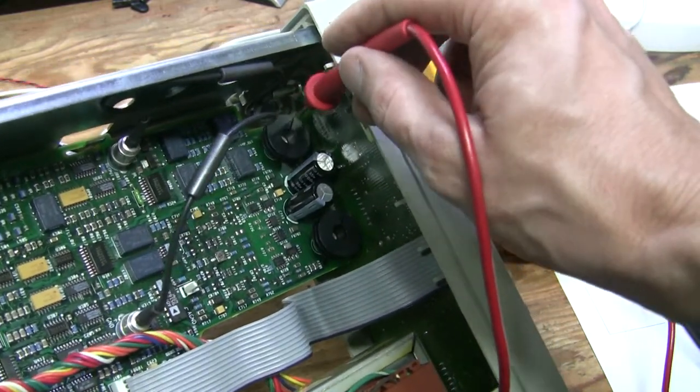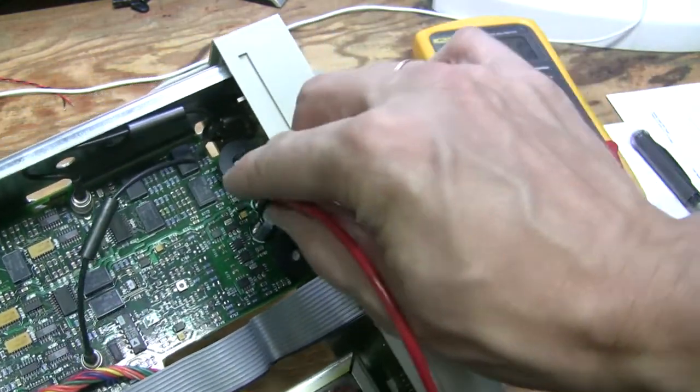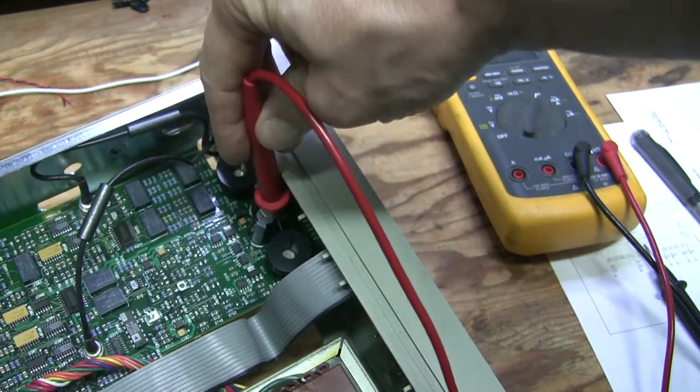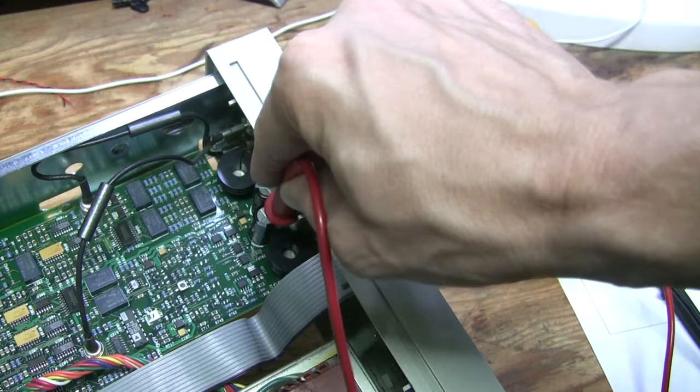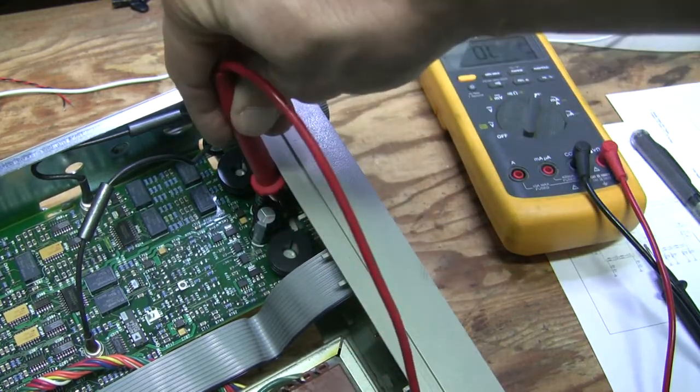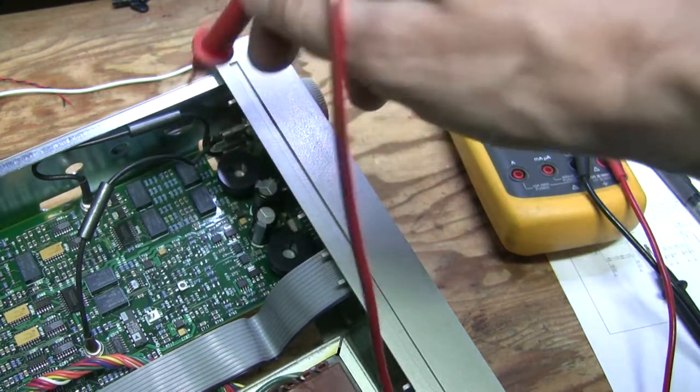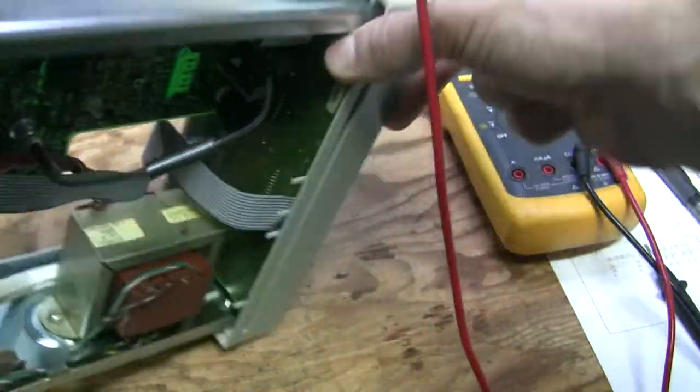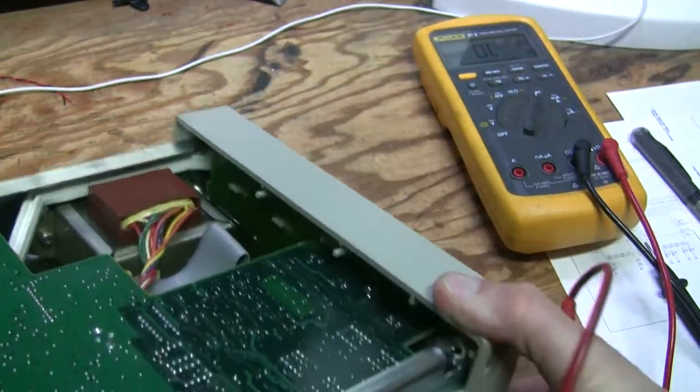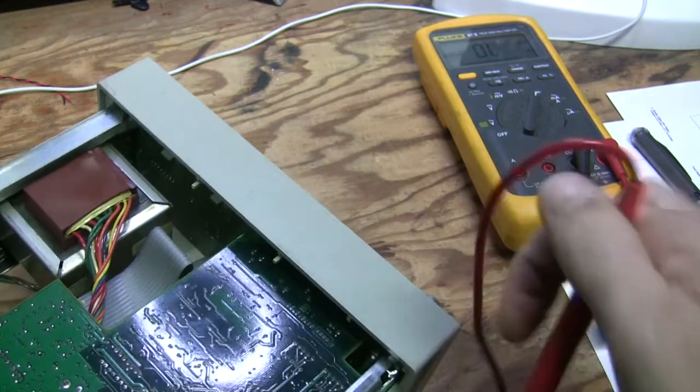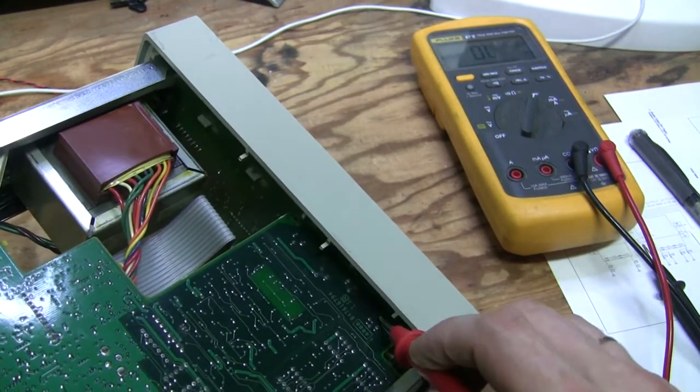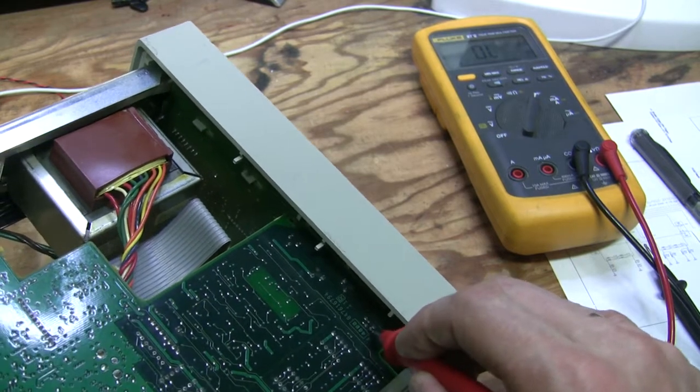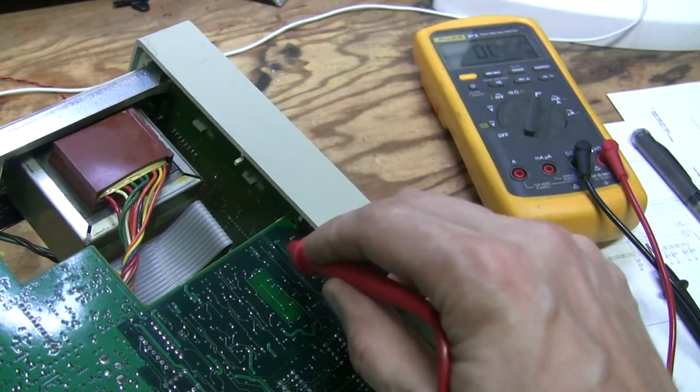So here they are, the output transistors. This is one—I believe this one is the negative side, and this must be the positive side. They have heat sinks on them. The zener is right there behind the heat sink and the cap so I cannot easily reach there to test the zener, but transistors we should be able to test from the bottom.